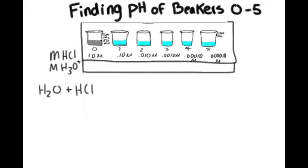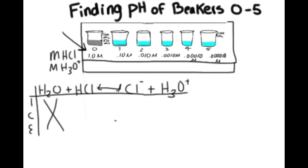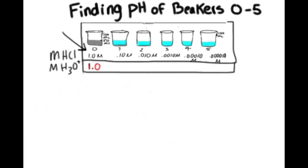To find the pH values for the solutions in our beakers, we can use an ICE table. Let's start with beaker zero, with a concentration of 1.0 molarity hydrogen chloride. Since hydrogen chloride is a strong acid, it dissociates completely, leaving the concentration of hydronium to be 1.0 molarity.